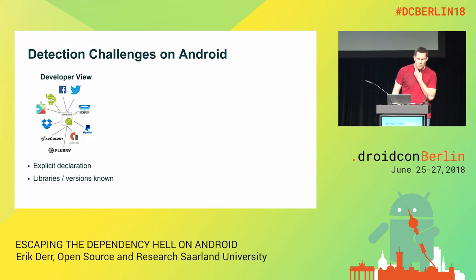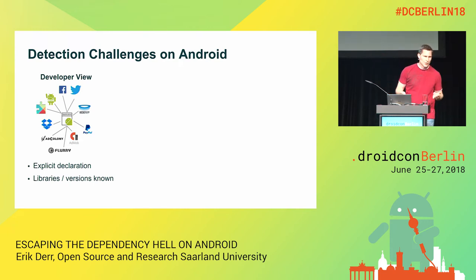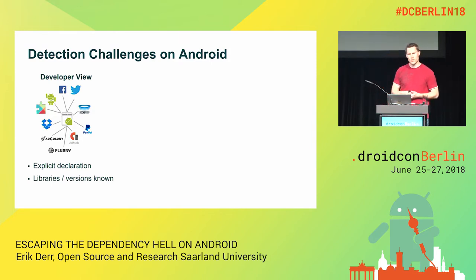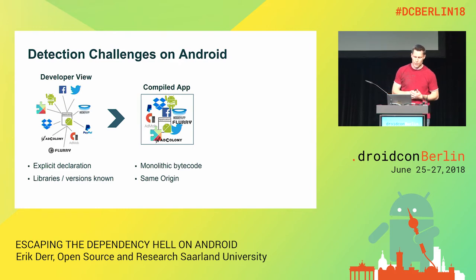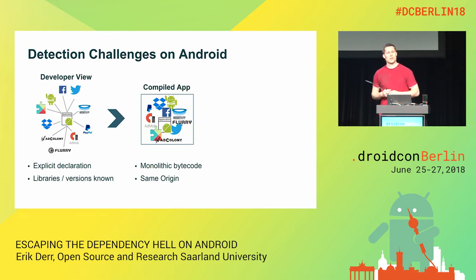How can we do this? The challenges in detecting libraries are best explained by looking at how libraries are integrated. In your Gradle file, you have an explicit declaration — you know which libraries you're using, which versions, and typically the source, like Maven Central or some other repository. But as soon as the app is compiled, this explicit mapping gets lost. Third-party code is statically linked to the application code, and you receive one or more bytecode files where all code origins are merged into a single DEX bytecode file.